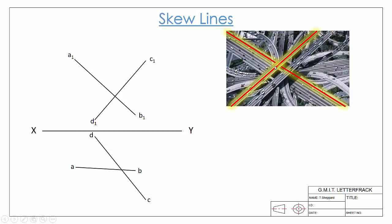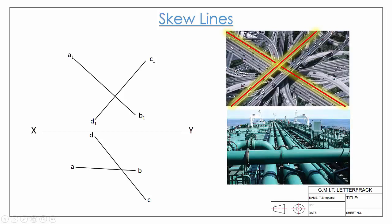It's not touching it, it's not crossing it, and they're definitely not parallel, so they're skew lines. Another example would be if we had pipes - here again, there's one line, and here we have a second pipe going underneath it.